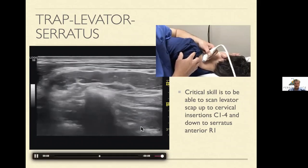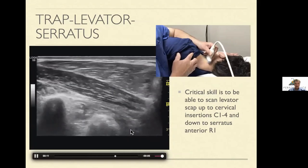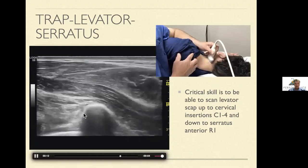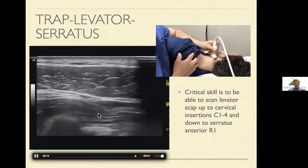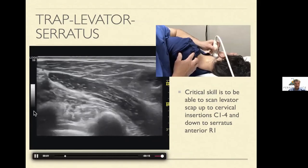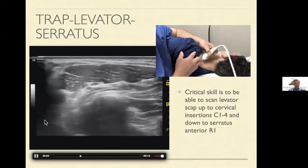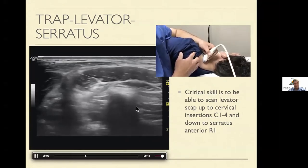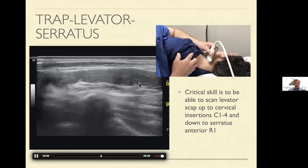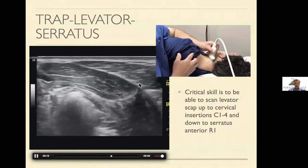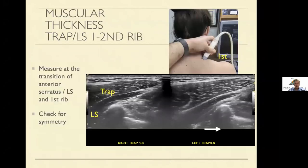Right at the end of this you'll see serratus anterior come in from this direction, underneath the levator. That's an important finding, and you need to be able to reproduce this: trap, levator scap, and the emergence of serratus anterior — because that's the critical element at the perimeter border. The scapula's relationship there is serratus anterior and levator scapula.